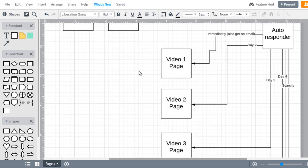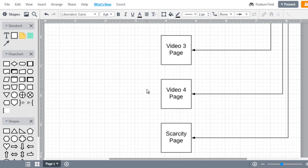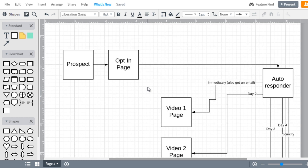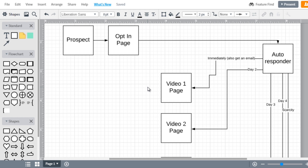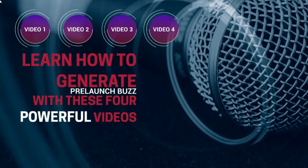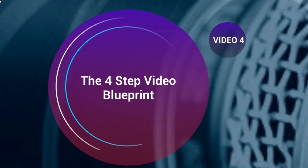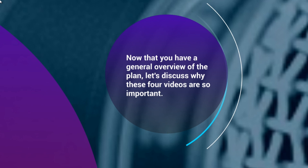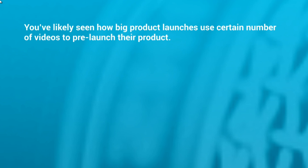I hope you enjoyed the basics of the mind map of the evergreen marketing funnel. Let's move on to the next video and talk about a quick overview of the four videos. Hello and welcome back — this is video four. We're going to talk about the four-step video blueprint and give you a quick overview. Now that you have a general overview of the plan, let's discuss why these four videos are so important. You've likely seen how big product launches use a certain number of videos to pre-launch their product.